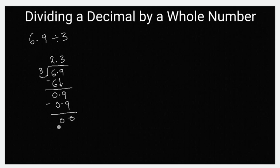When you have zero, that means you're done with your long division and your answer is equal to two point three. As simple as that.